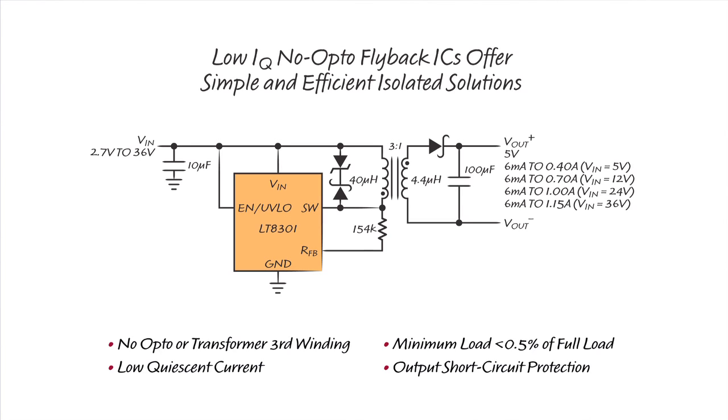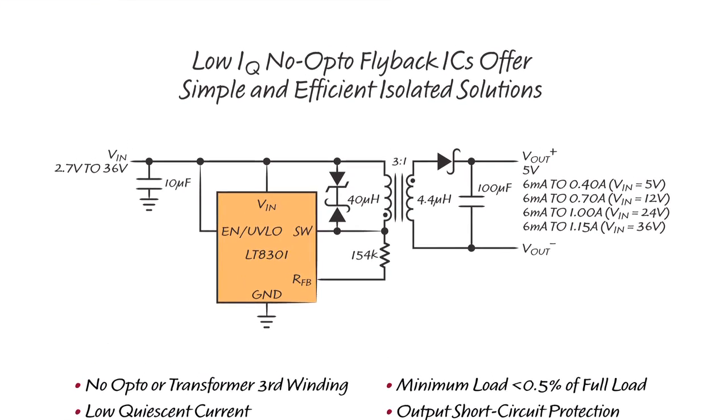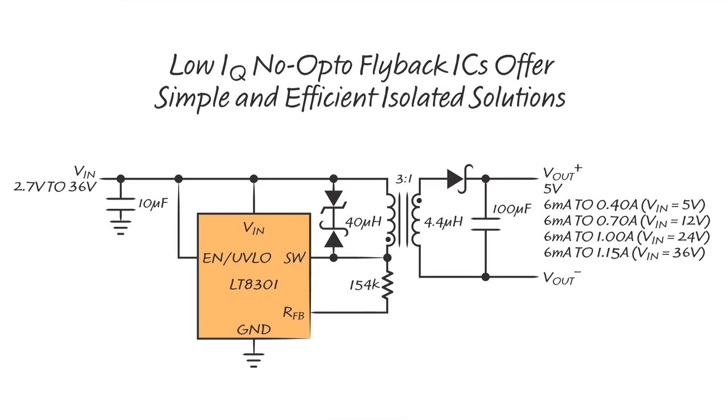To give you an example, here is a 5-volt isolated flyback converter from a 2.7-volt to 36-volt input using the LT8301, a recent part in our Low IQ No Opto Flyback family. Housed in a TSOT23-5 package, the LT8301 requires only 7 external components, thereby providing a super-compact isolated power solution up to 6W.